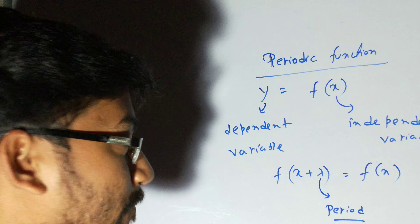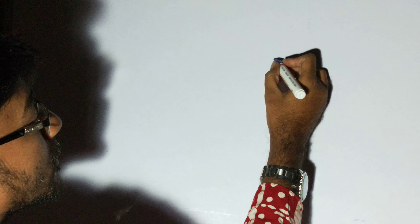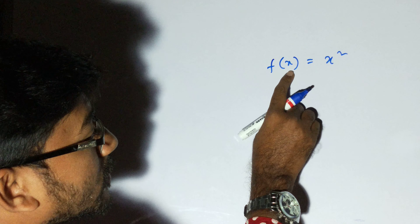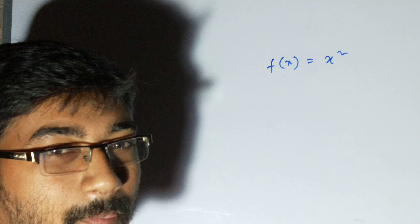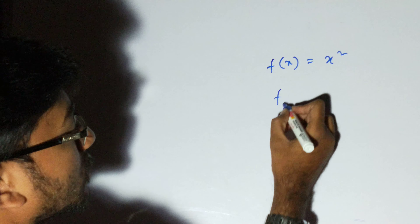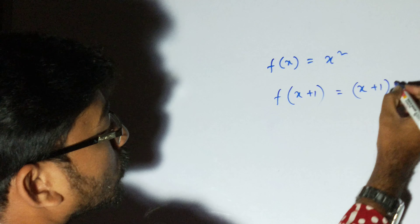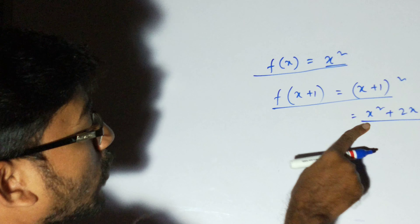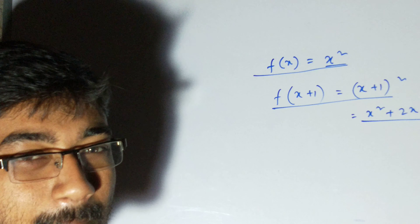Let's take the example f(x) = x². If we add a constant, say 1, we get f(x+1) = (x+1)² = x² + 2x + 1, which is not equal to x². So f(x) and f(x+1) are completely different. Therefore, this function is not a periodic function. Also keep in mind that lambda cannot be 0, because adding 0 would make every function periodic and the definition would collapse.